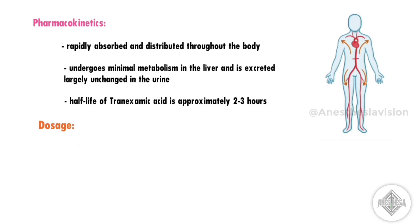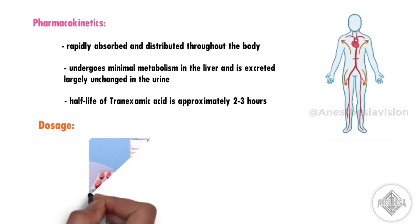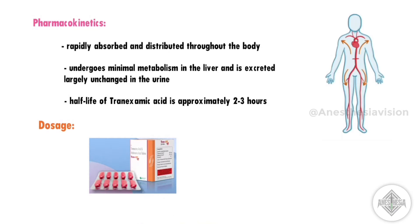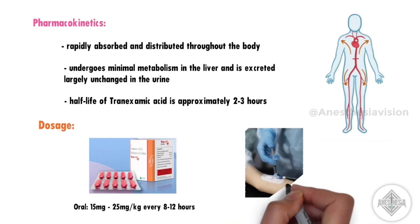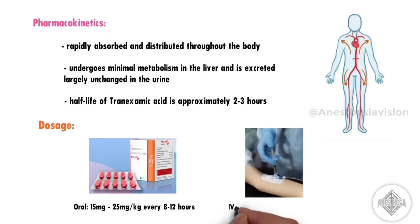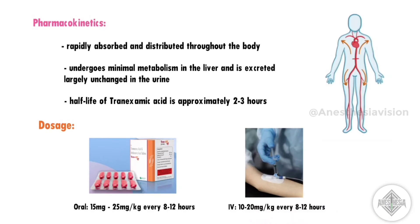Dosage: The usual dosage of tranexamic acid via the oral route is about 15 to 25 mg per kg every 8 to 12 hours. Intravenously, it is about 10 to 20 mg per kg every 8 to 12 hours.